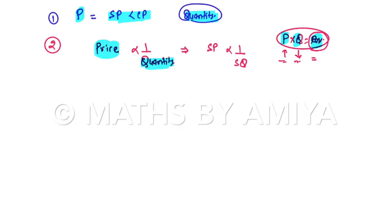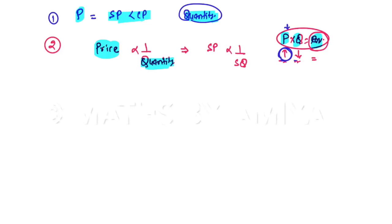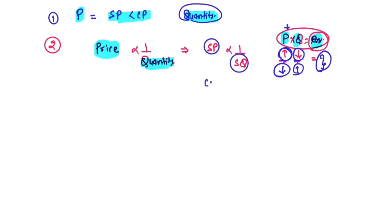Price × quantity = revenue. If revenue and other things remain constant, increasing price means decreasing quantity, and vice versa. So selling price is inversely proportional to selling quantity, and cost price is inversely proportional to cost quantity. Merging these two: selling price / cost price is proportional to cost quantity / selling quantity. That is our third learning.